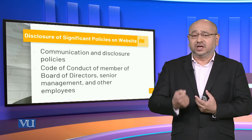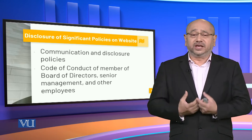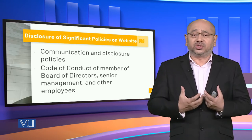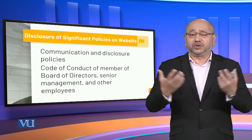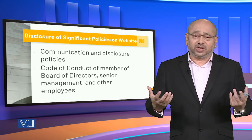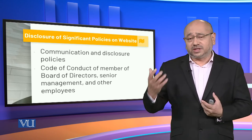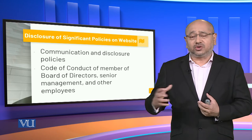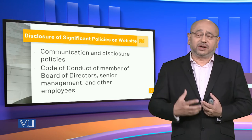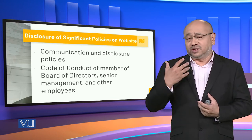The first and foremost policy is about communication and disclosure policies. Unless something is secret or is about a product and the company doesn't want to share the contents of those products, there has to be freedom of information and availability of information.